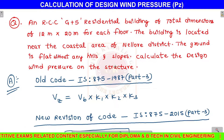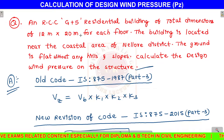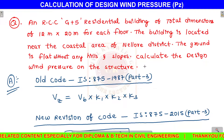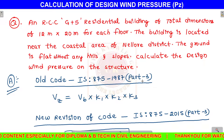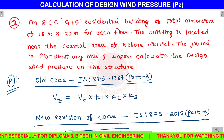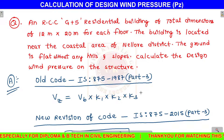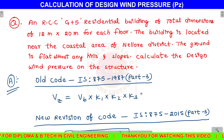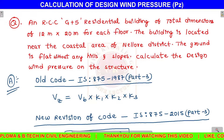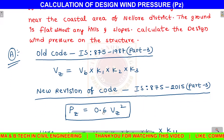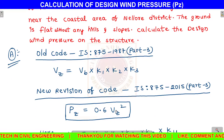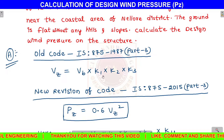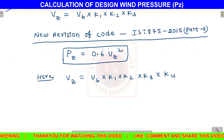We need to calculate the design wind pressure on the structure. The design wind pressure formula is Pz equals 0.6 times Vz squared. This Vz is equal to VB into K1 into K2 into K3.